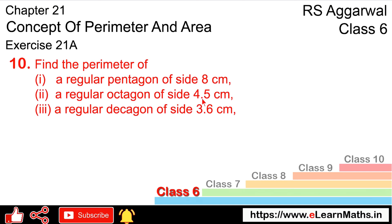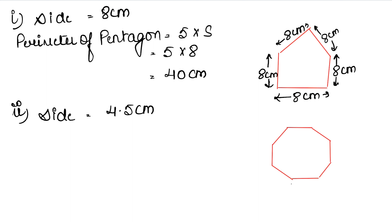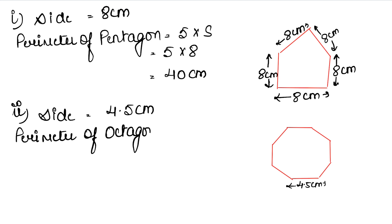The next part is a regular octagon of side 4.5 cm. An octagon has 8 sides, all equal to 4.5 cm. Perimeter of octagon equals 8 into side, so 8 into 4.5: 8 fives are 40, carry 4; 8 fours are 32, plus 4 carry is 36. So the answer is 36 cm.